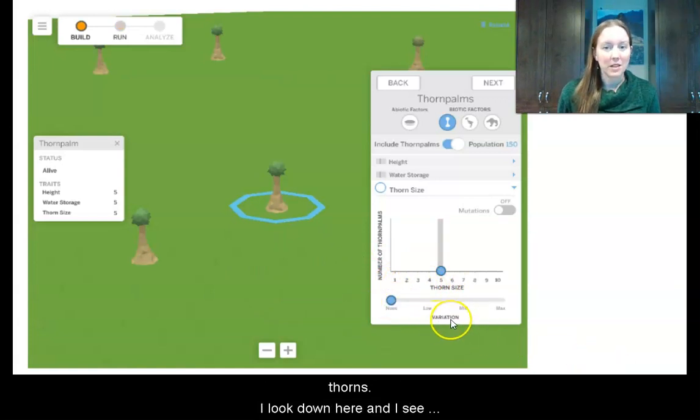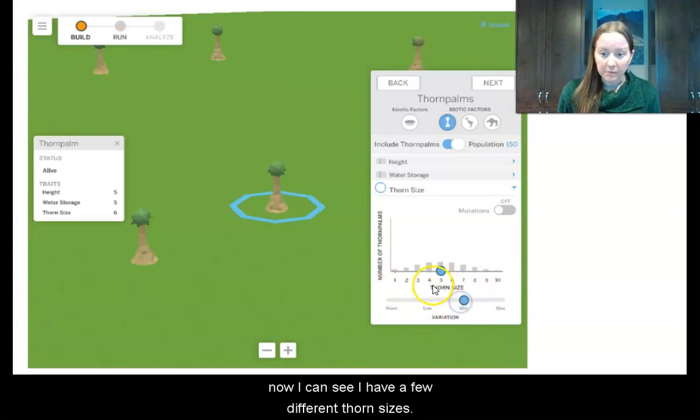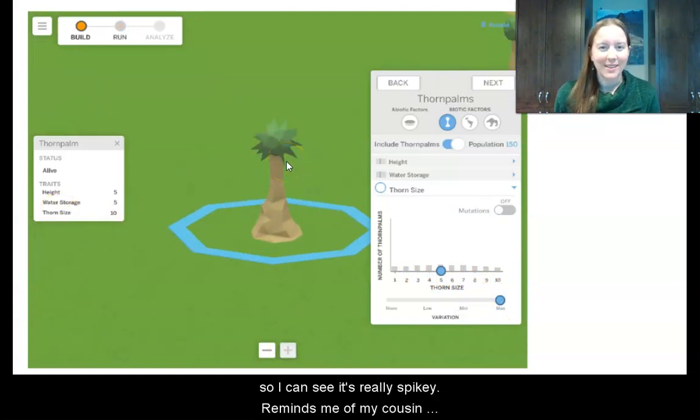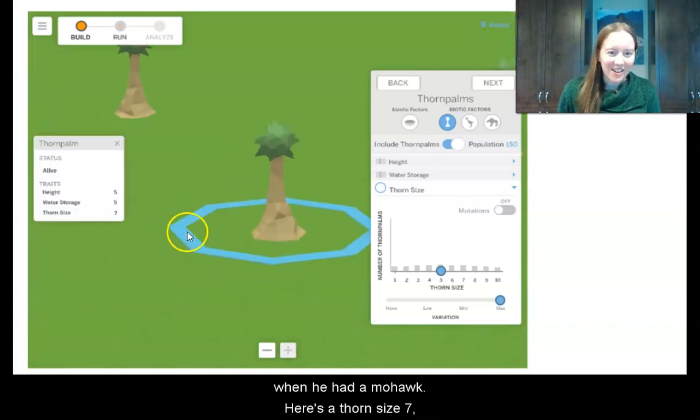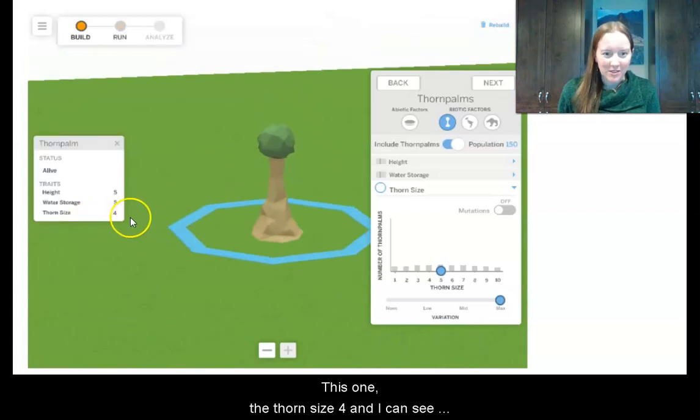So the second mission is to have many different sizes of thorns. I look down here and I see this little bar that says variation. If I move it over to low variation, now I can see that I have a few different thorn sizes. If I move it over to medium, then I have even more different thorn sizes. If I move it over to high, then I can see that I have all the different thorn sizes. So I look at this and now this one has thorn size 10, so I can see it's really spiky. Kind of reminds me of my cousin when I had a mohawk. And here's another, this one is thorn size 7. And so I can see that we have different thorn sizes. This one is a thorn size 4 and I can see it has barely any spikes on it at all.